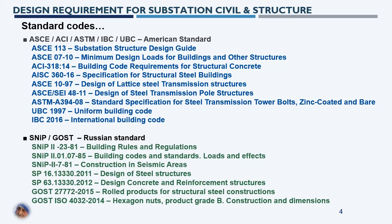UBC 1997 is the Uniform Building Code, which has been superseded by IBC 2016, the International Building Code. For Russian codes, SNiP 2.01.07-85 covers building rules and regulations and load combinations to be adopted. SNiP 2.01.07-85 also gives load effects such as imposed load, dead load, settlement, ice load, wind load, and seismic load — the load calculation methodology can be adapted from this standard. SNiP 2.07.01 is for construction in seismic areas.